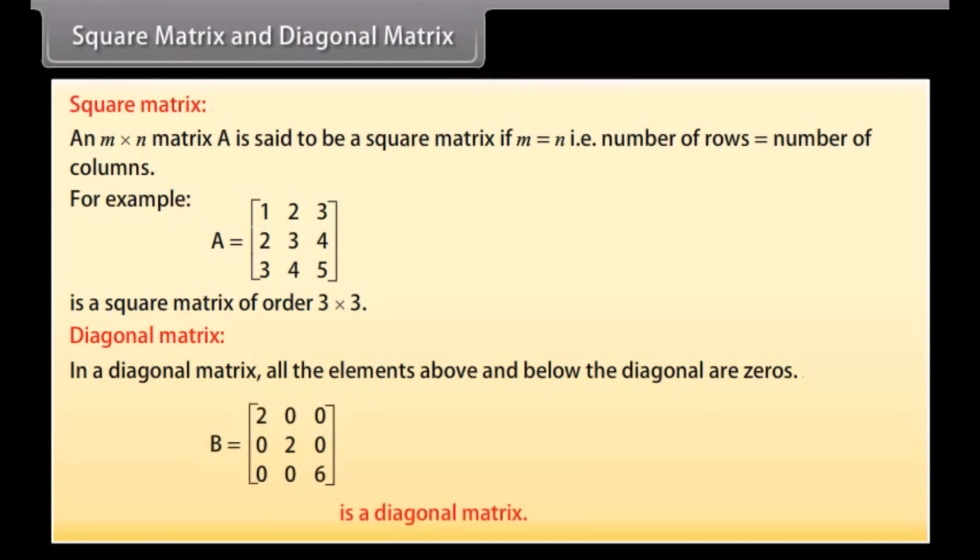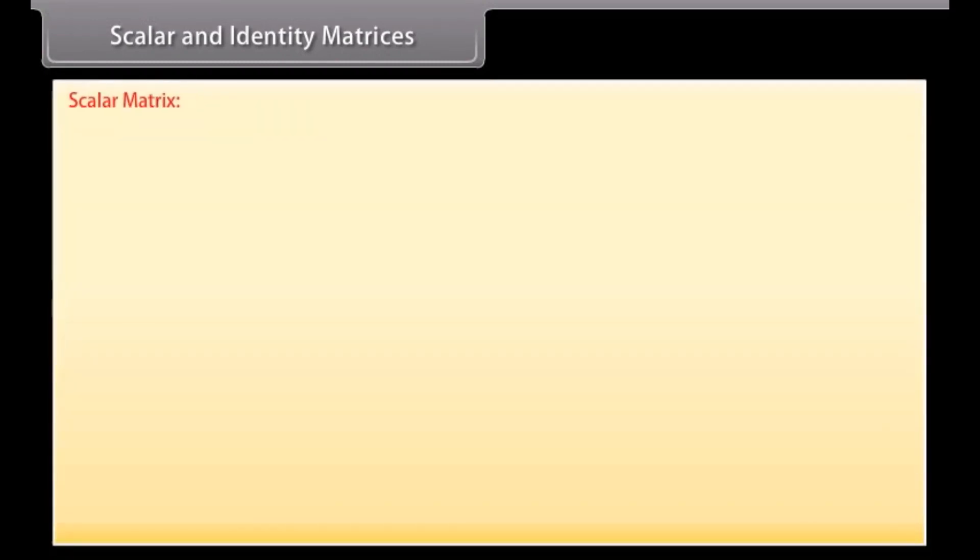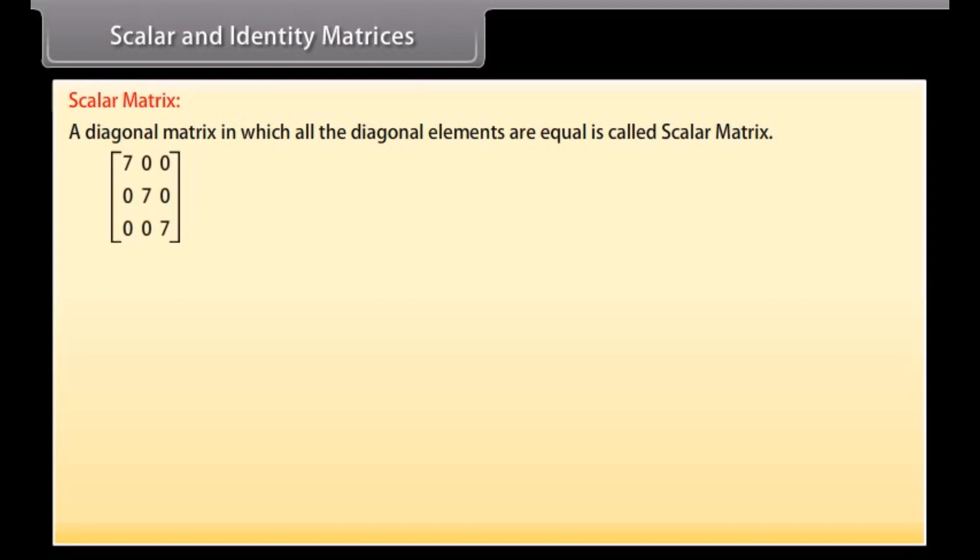Scalar and identity matrix. Scalar matrix. A diagonal matrix in which all the diagonal elements are equal is called scalar matrix. Look at this matrix. It is the diagonal matrix with the diagonal elements same, that is 7. Therefore, it is a scalar matrix.